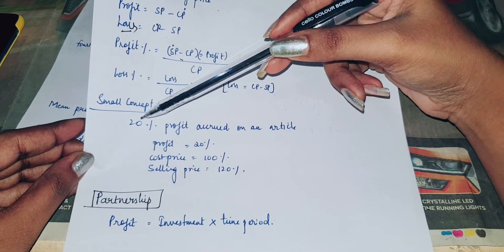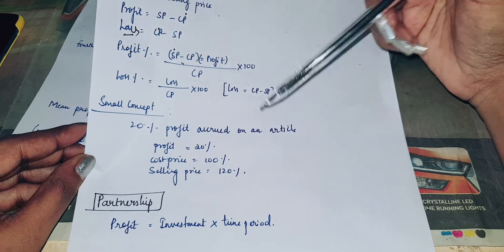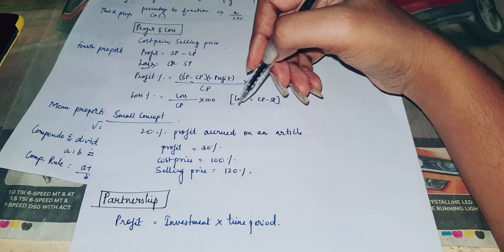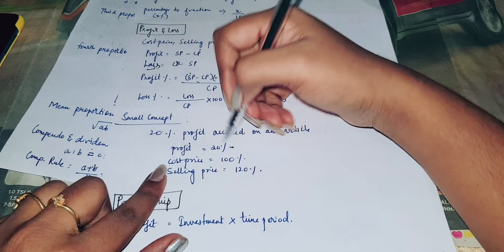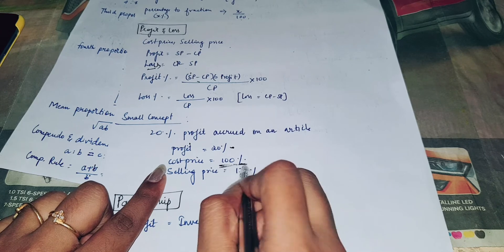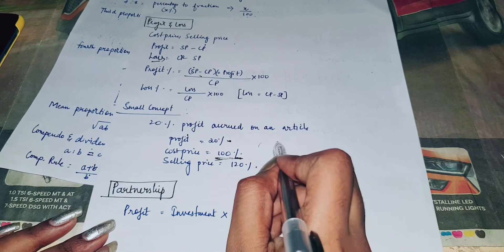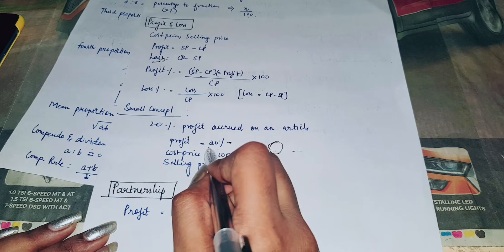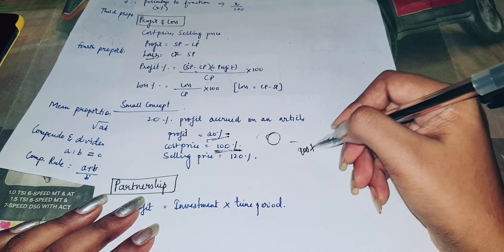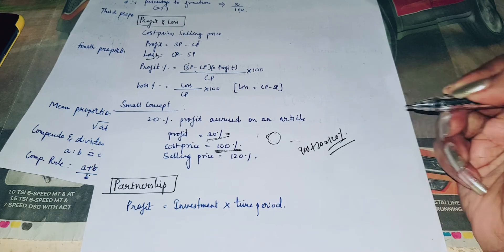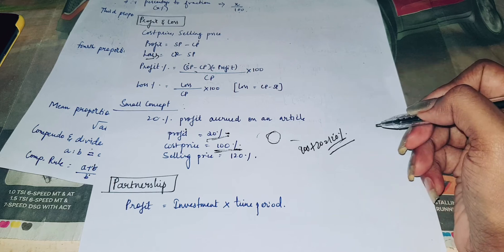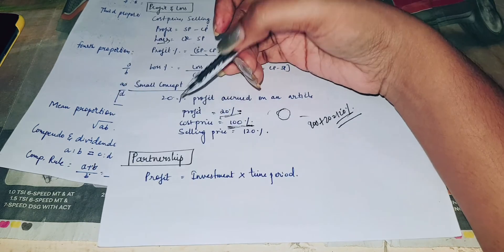For example, 20% profit on an article means: Cost Price is 100%, so 20% profit means Selling Price is 100% plus 20%, which is nothing but 120%. So Selling Price equals 120% of Cost Price.